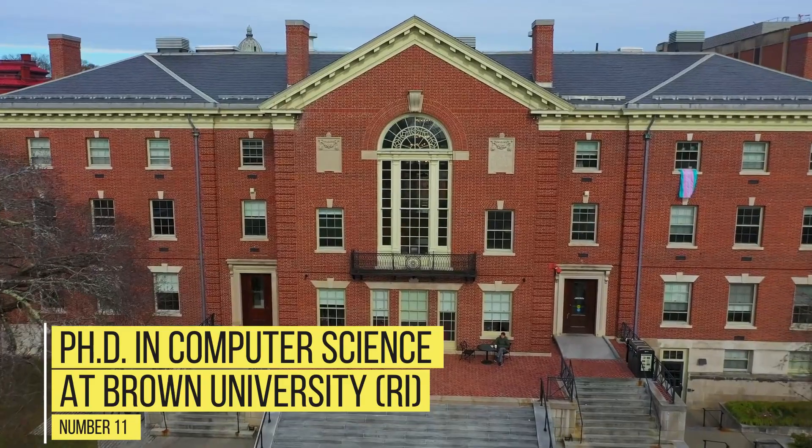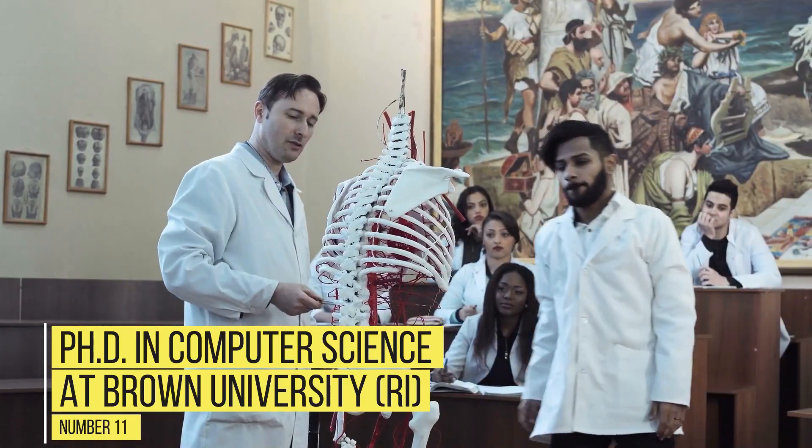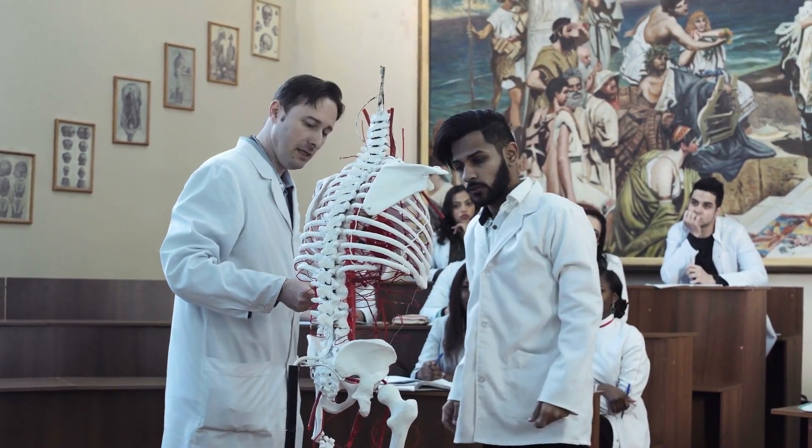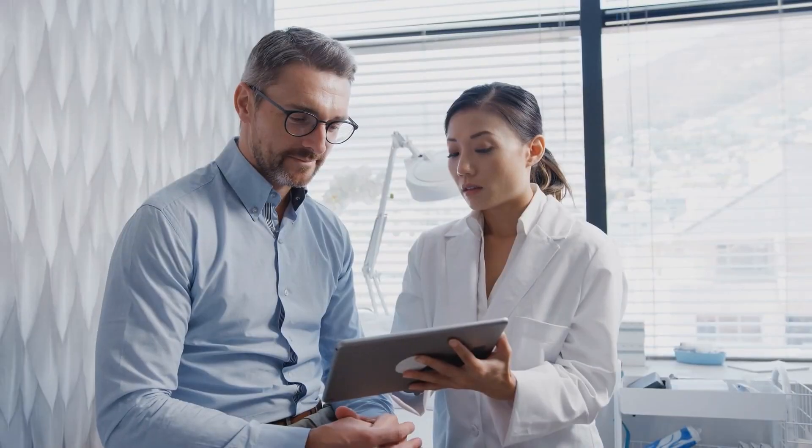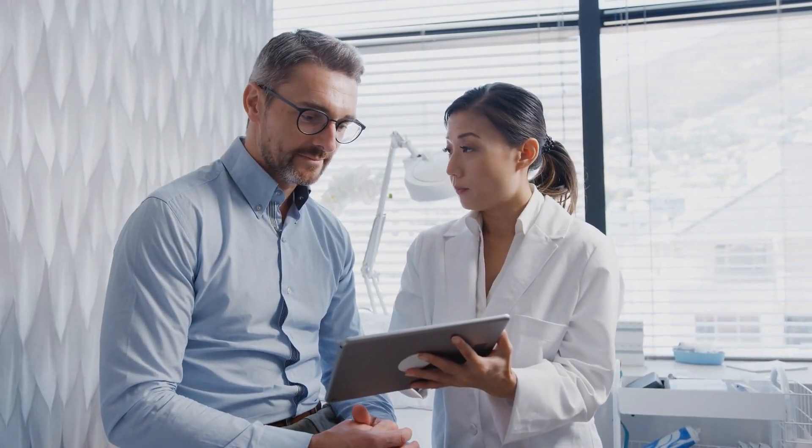Number 11: PhD in Computer Science at Brown University. Brown University offers substantial financial support to doctoral students. All incoming doctoral students are guaranteed five years of support, which includes a stipend, full tuition remission, health services fee, and a health insurance subsidy.